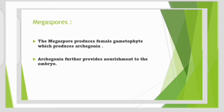Our next slide is of Megaspores. Megaspores, as the name indicates, 'mega' means huge or bigger in size. So these spores are comparatively bigger than Microspores. These Megaspores further produce female gametophyte, which produces Archegonia. Archegonia is a female reproductive organ in which the embryo develops.